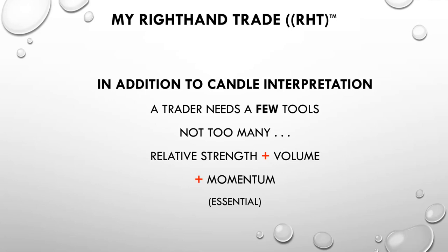Now we can trade micro futures, and that's what people new to the business should gravitate toward. Relative strength, volume, and momentum indicators are essential. You want to look at the MACD, relative strength, and volume — two kinds: discrete volume and cumulative volume. Cumulative volume is what makes the world go around.